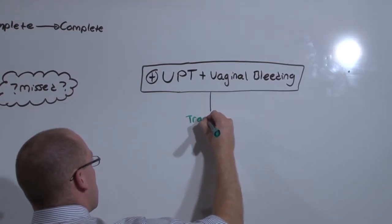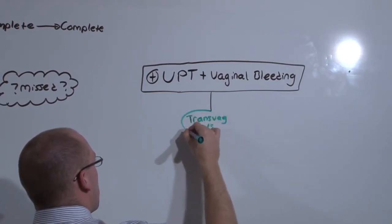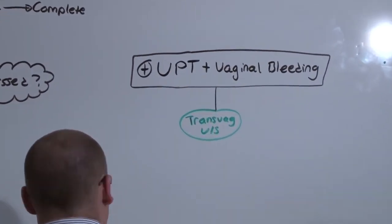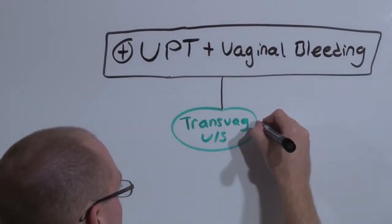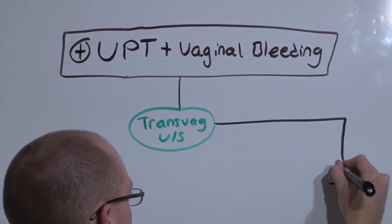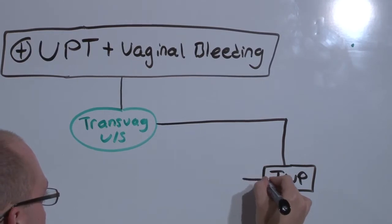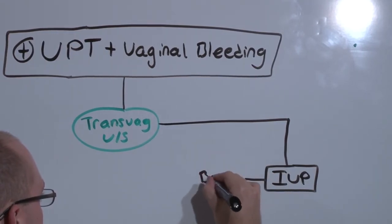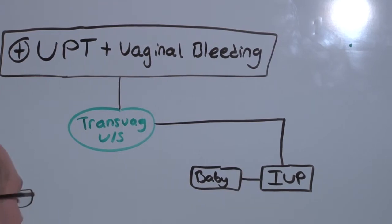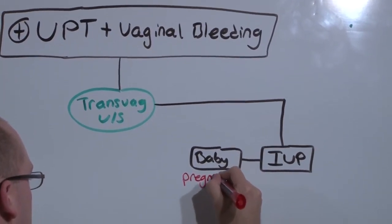The ultrasound is the most potent tool you've got to evaluate baby. So not surprisingly, you're going to use the transvaginal ultrasound and attempt to identify an intrauterine pregnancy. You're UPT positive, you're hoping it's a normal pregnancy. If you obviously have an intrauterine pregnancy, you've seen something in the uterus, you have to decide whether it's just a healthy baby.